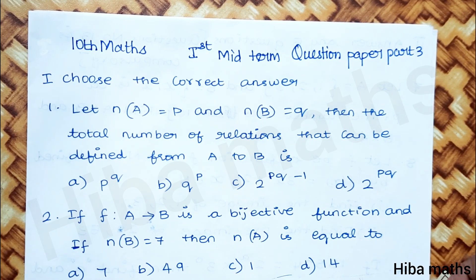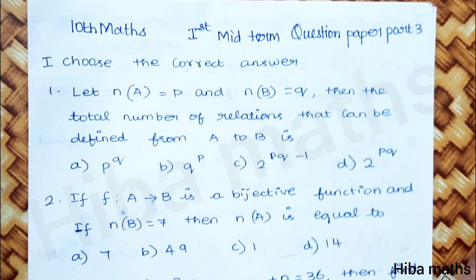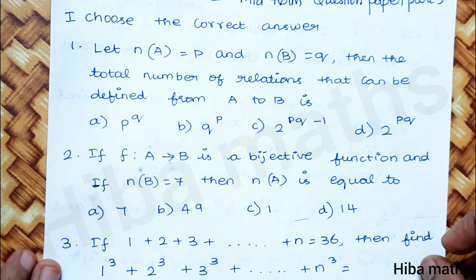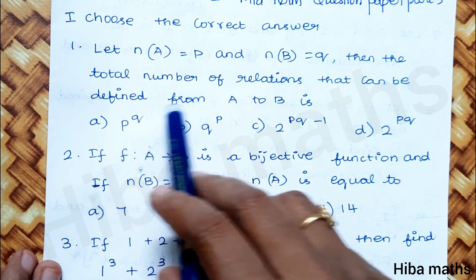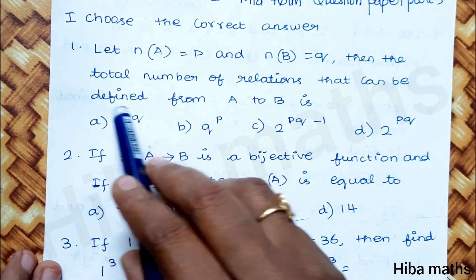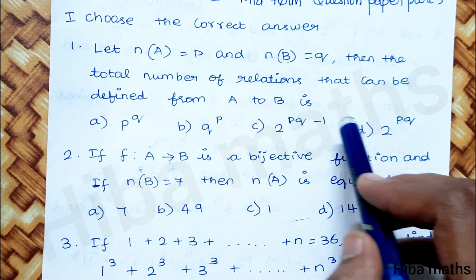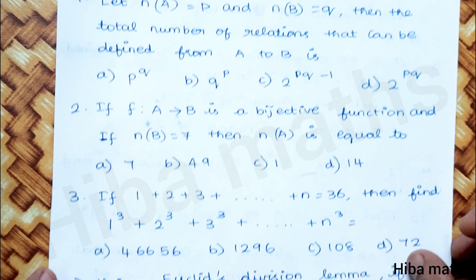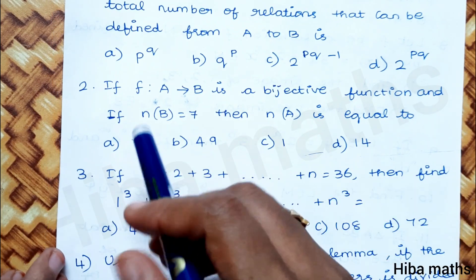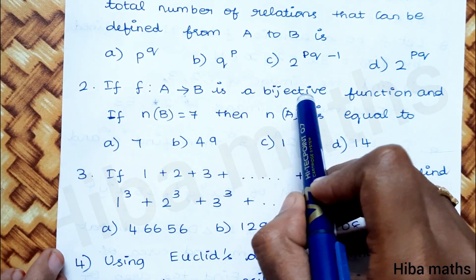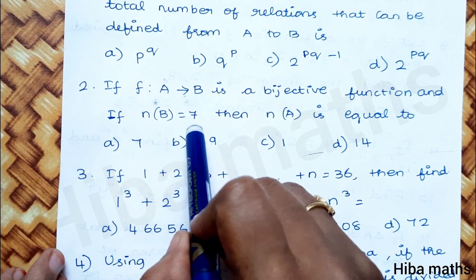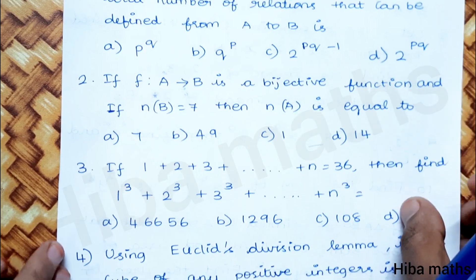First question: n of A is equal to p and n of B is equal to q. Find the total number of relations that can be defined from A to B. The same question appeared in the last question paper. Second question: if a function A to B is a bijective function and n of B is 7, then n of A is equal to?